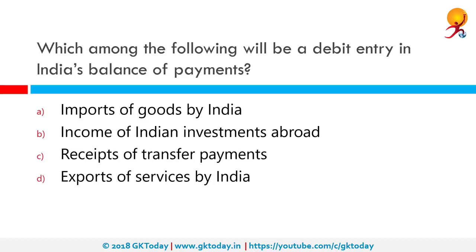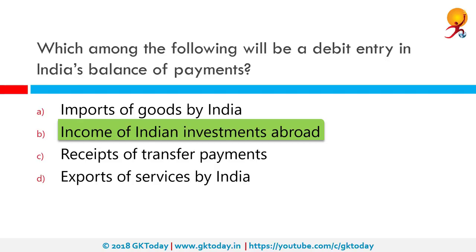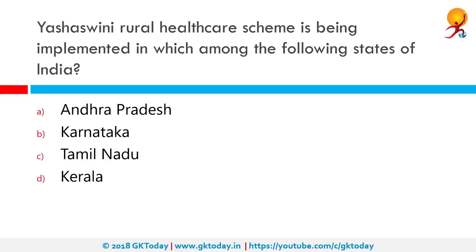Which among the following will be a debit entry in India's balance of payments? The correct answer is income of Indian investments abroad. The balance of international payments refers to the systematic and summary record of a country's economic and financial transactions with the rest of the world over a period of time. The Yashaswini Rural Healthcare Scheme is being implemented in Karnataka, as a cooperative farmers healthcare scheme offering health insurance coverage to tenant farmers who are members of cooperative societies.